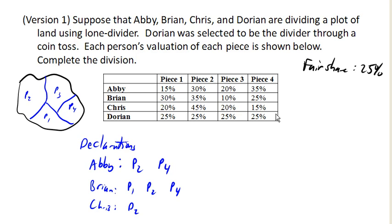Notice in this case, we can accomplish our division without needing anything complicated, without needing a standoff. Chris can get piece two. Abby can get piece four. Brian can get piece one. And Dorian gets the remaining piece. The divider always gets the last piece.